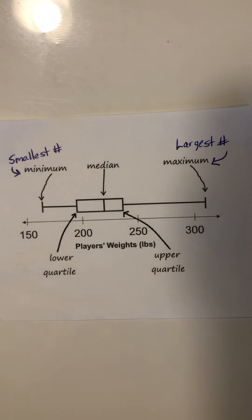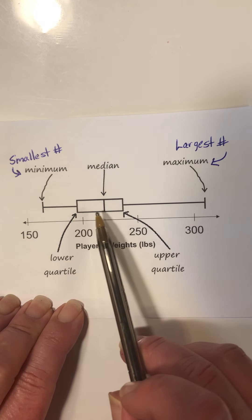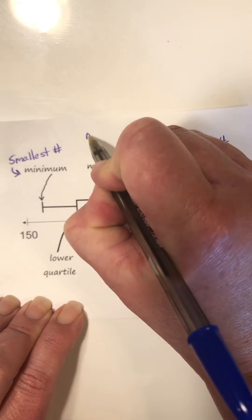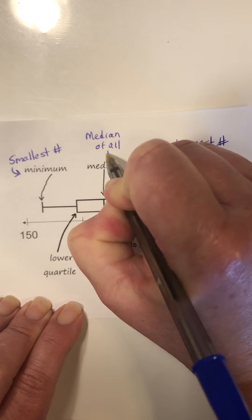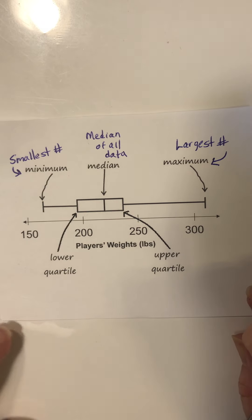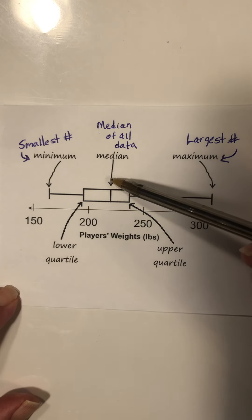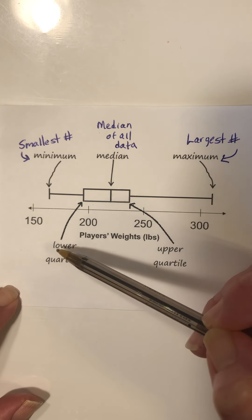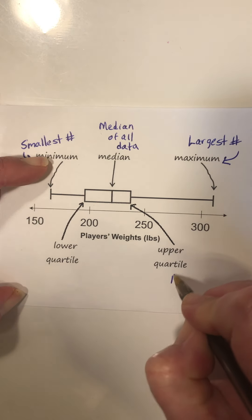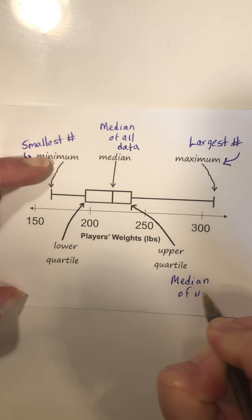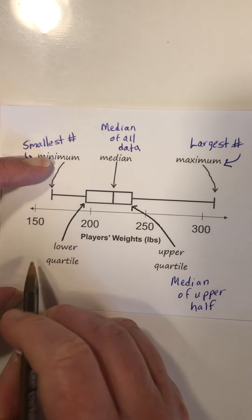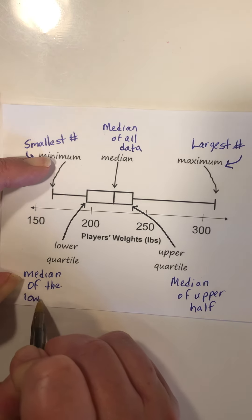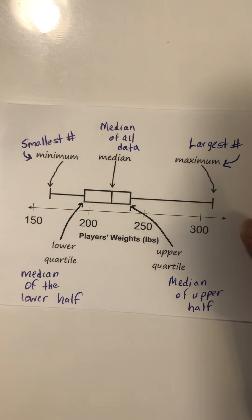Those are the two whiskers, but in the middle you will have what the box is made of, which is the median — that's the middle value of all the data. Then the box is created by the upper quartile and the lower quartile. The upper quartile is the median of the upper half, and the lower quartile is the median of the lower half.